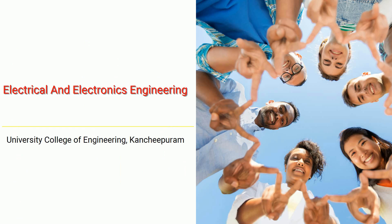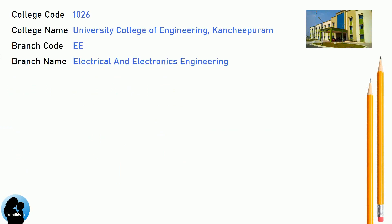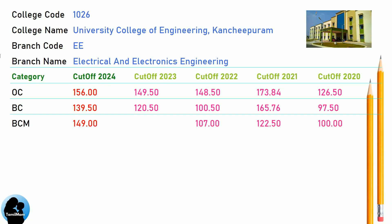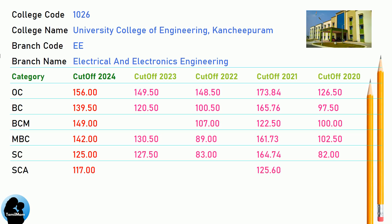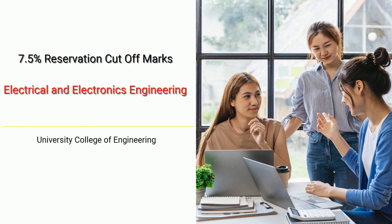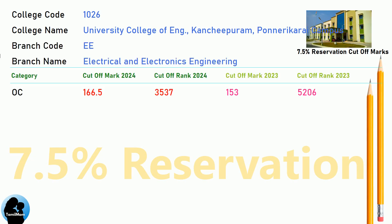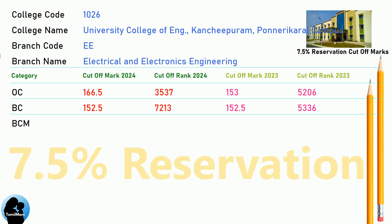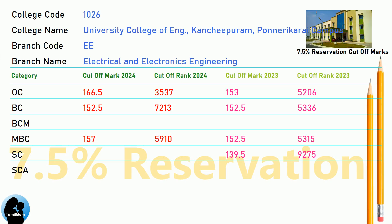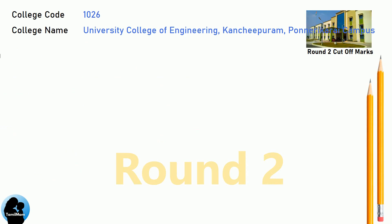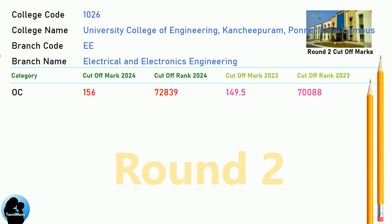DNA 7.5 Reservation Cut-Off for University College of Engineering, Kanchipuram in Electrical and Electronics Engineering. DNA Round 2 Cut-Off for University College of Engineering, Kanchipuram in Electrical and Electronics Engineering.